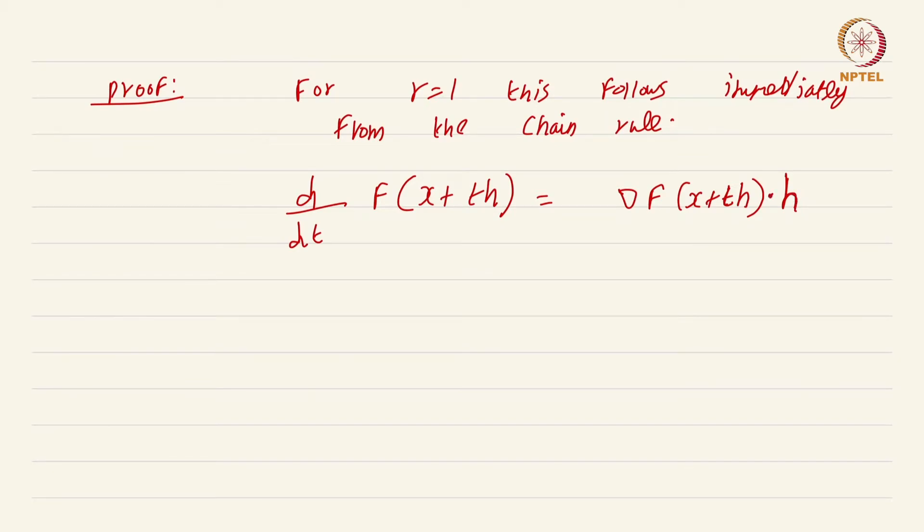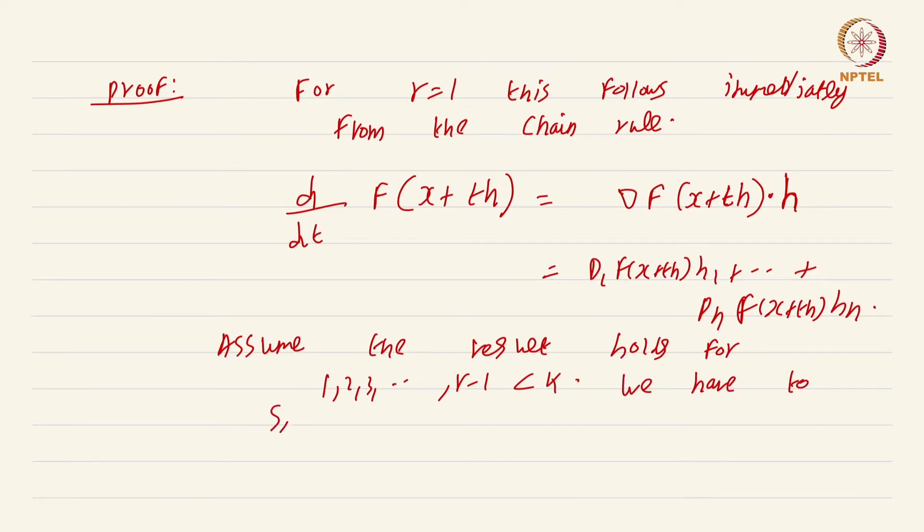This is just d_1 f of x plus th times h_1 plus dot dot dot d_n f of x plus th times h_n. The base case of the induction is straightforward. Now assume the result holds for 1, 2, 3, dot dot dot r minus 1, all of these are less than k. Now we have to show the result for r.